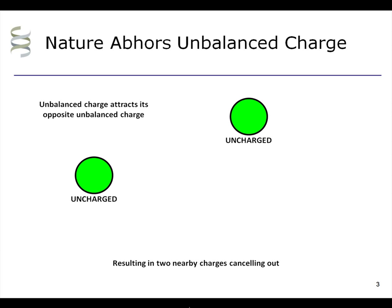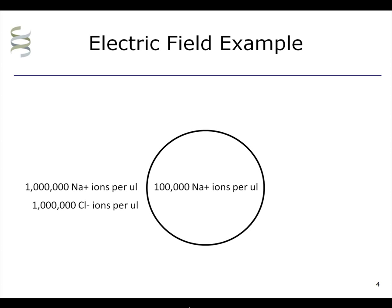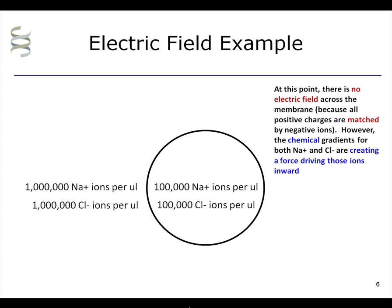So, in our example, let's say there are also one million chloride ions per microliter outside the cell, thus matching the sodium, and also 100,000 chloride ions per microliter inside the cell, thus matching the sodium ions inside. At this point, there is no electric field across the membrane, because all positive charges are matched by negative ions.